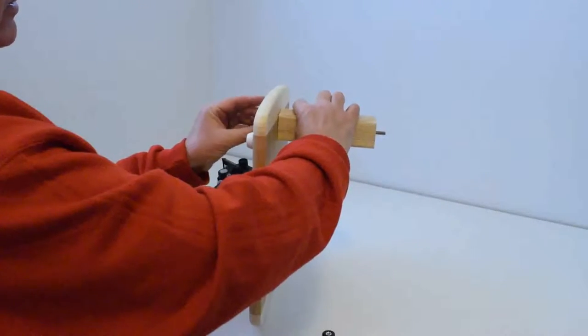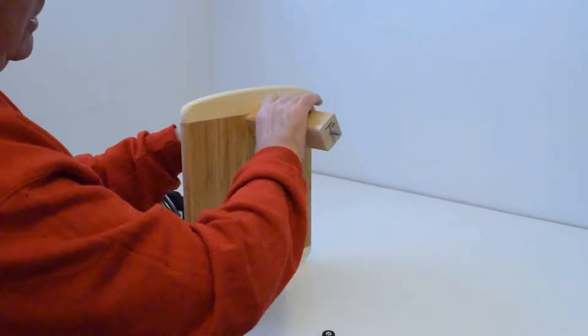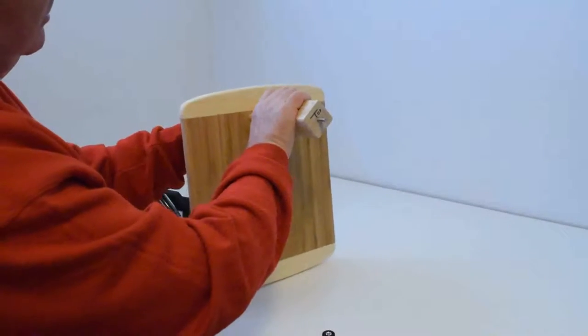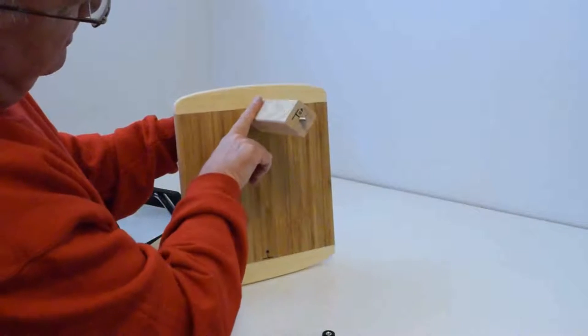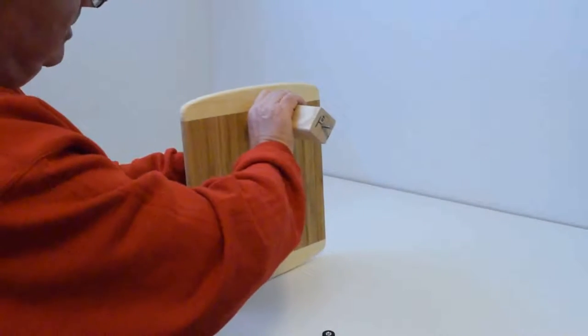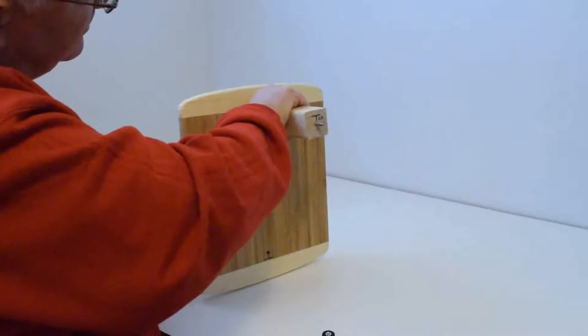The best way to tighten this is to get it finger tight with this backed off about 45 degrees, and while you hold the nut you turn this the last 45 degrees, the last eighth of a turn. It's very nice and tight.